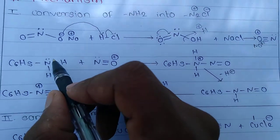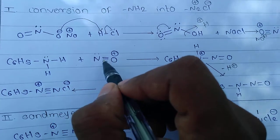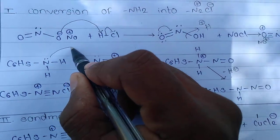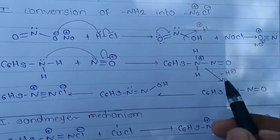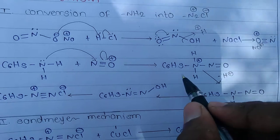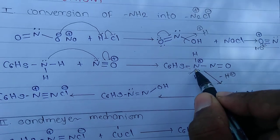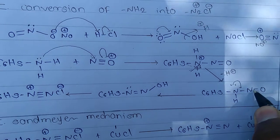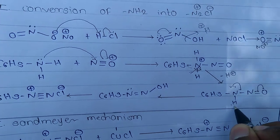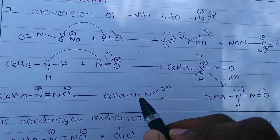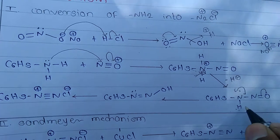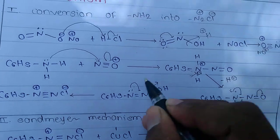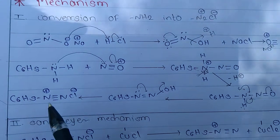When the amine is introduced to the NO+ ion, a complex forms. In the presence of minus H+, the lone pair attacks and O minus takes the hydrogen. Further lone pair attack gives the diazonium salt C6H5N2+ Cl-, where Cl- acts as the counter anion.